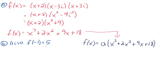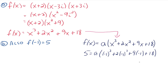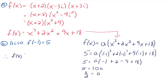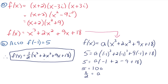So 5 equals 10a, which gives a equals one half. Therefore f of x equals one half times x cubed plus 2x squared plus 9x plus 18. That function has the three zeros of negative 2, 3i, and negative 3i, and if you graph it, it passes through the point negative 1, 5. It's the only cubic function that goes through negative 1, 5 and has those three zeros.